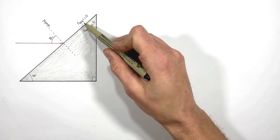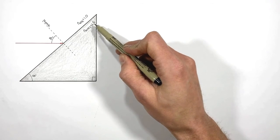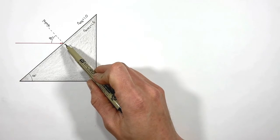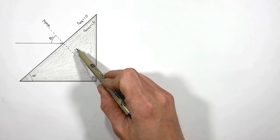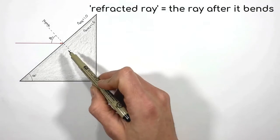So given the index of refraction of air is 1.0, and of glass is 1.5, we can now use Snell's law to solve for the direction which the refracted ray is going to travel through this glass relative to the normal.